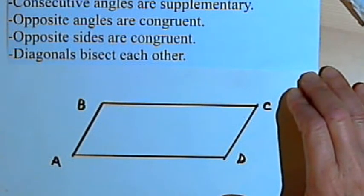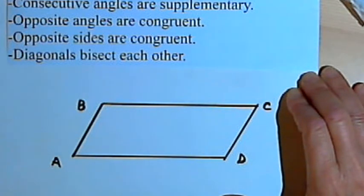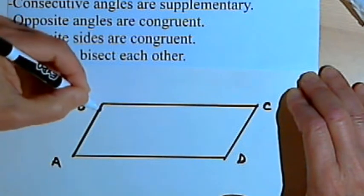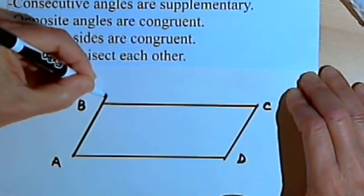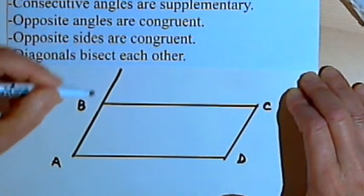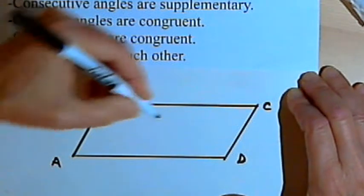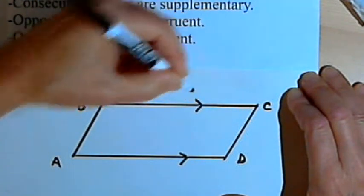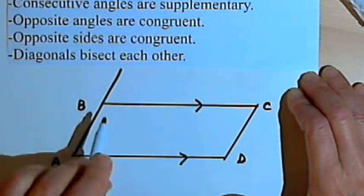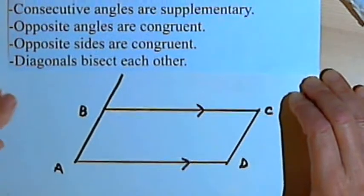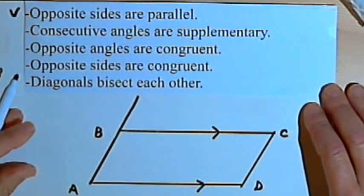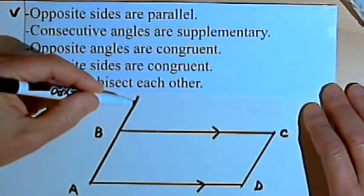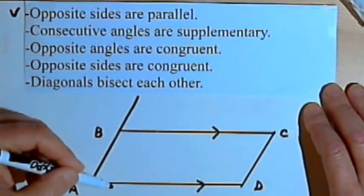If A and B are supplementary, we can show that the rest of them are the same way. I'm going to take side AB and extend it. What I've got here is two parallel lines — the base of the parallelogram and the top, side AD and side BC. We know they're parallel because that's part of the definition. Side AB, which I've extended, is a transversal that cuts across those two parallel lines.